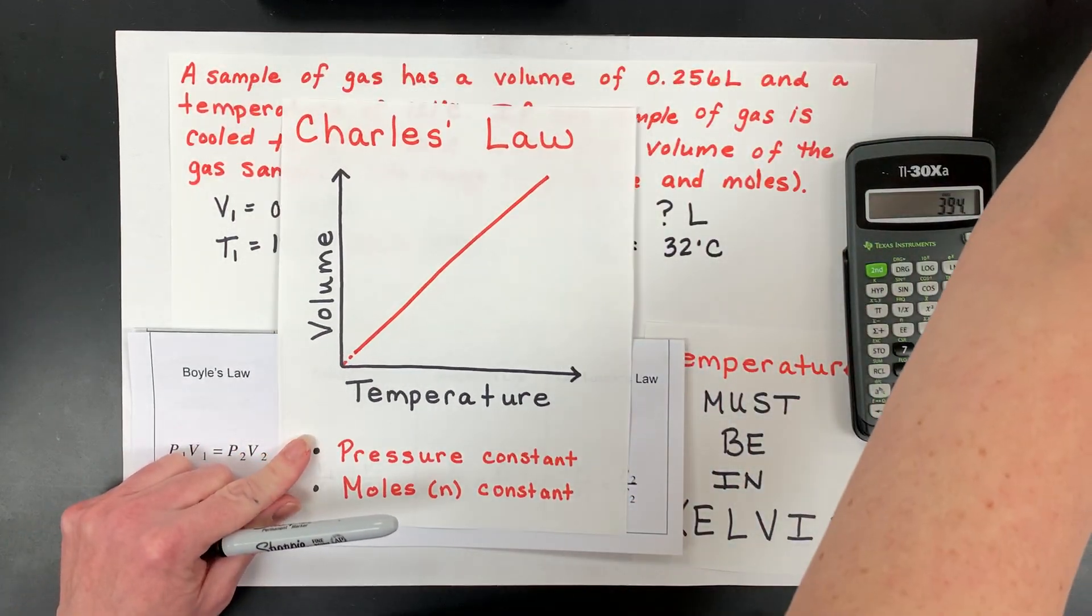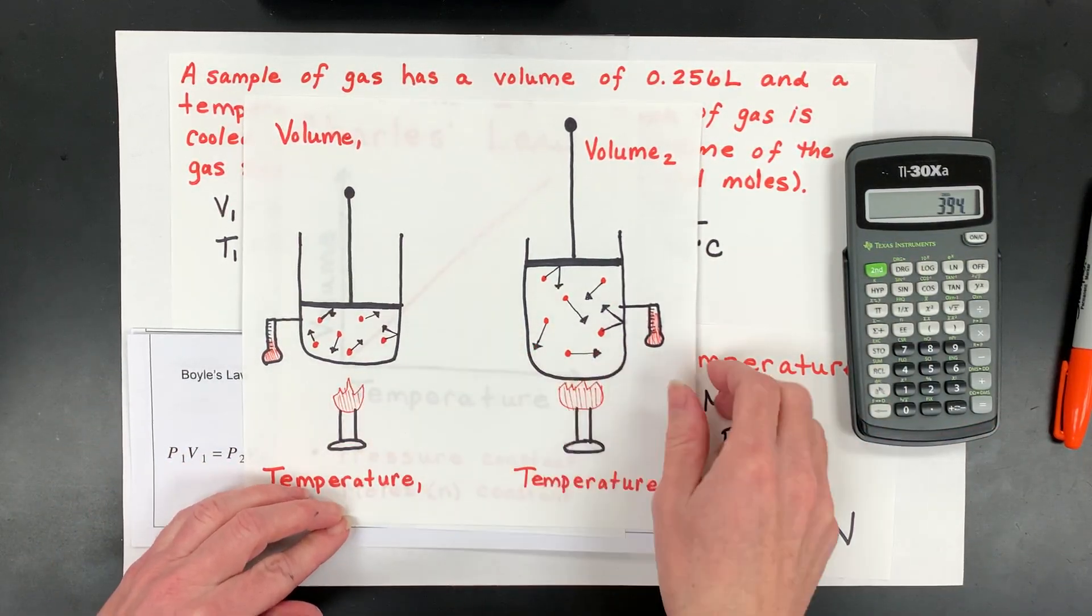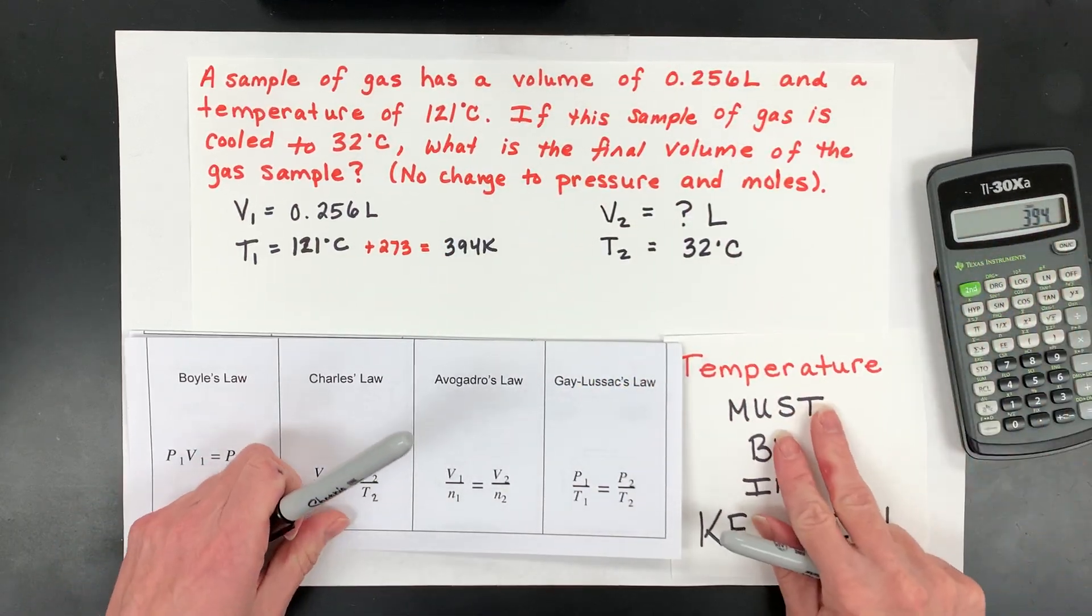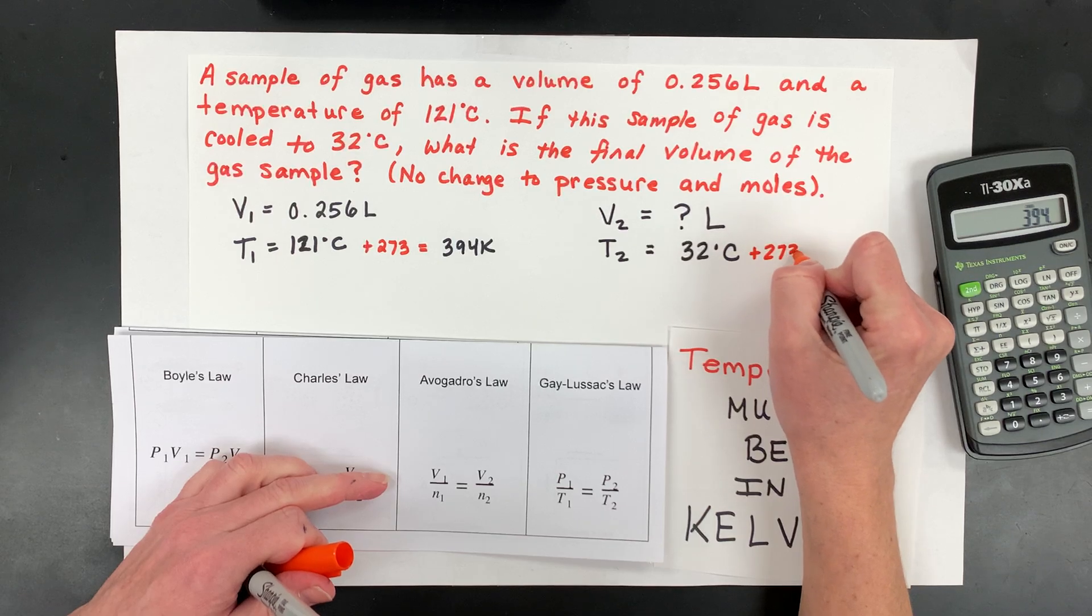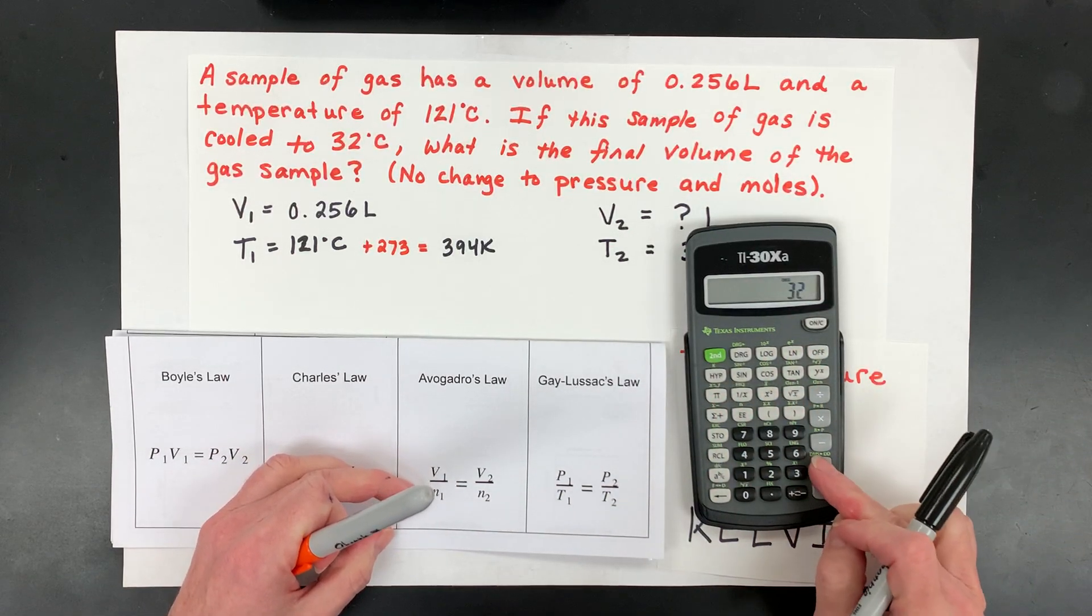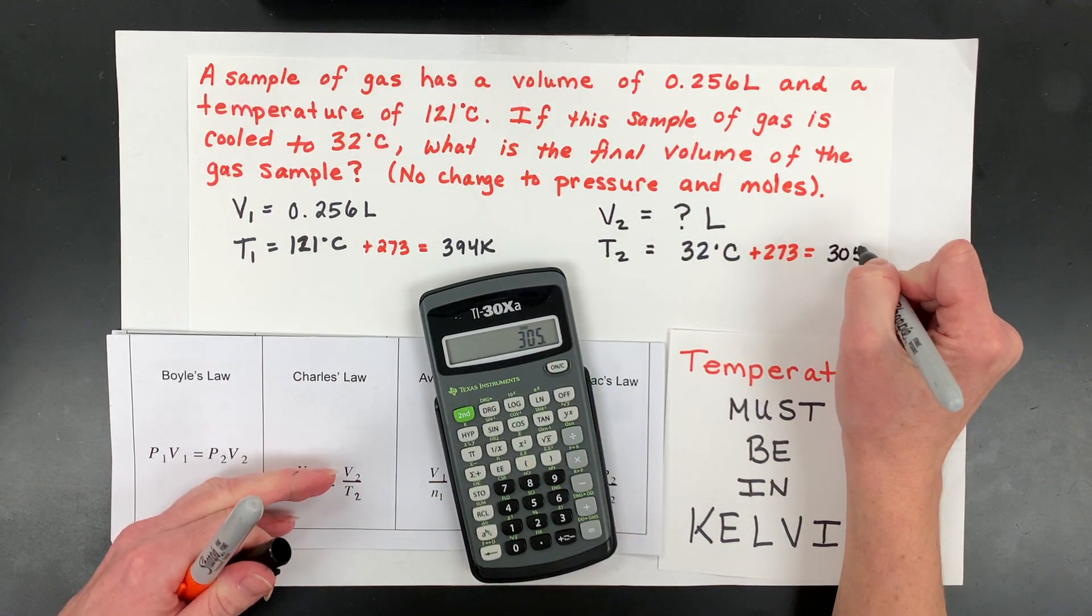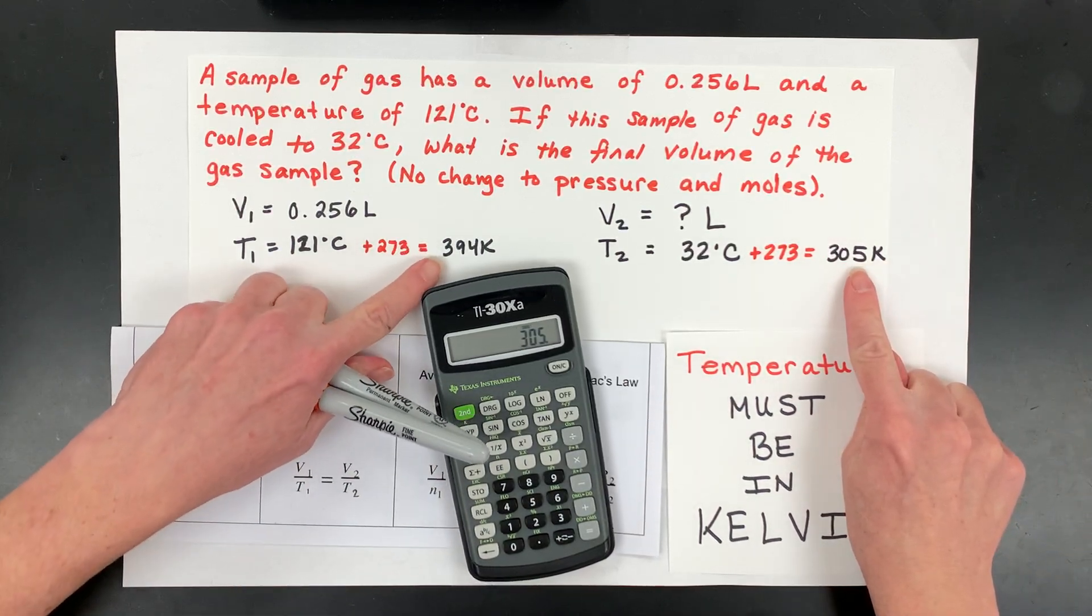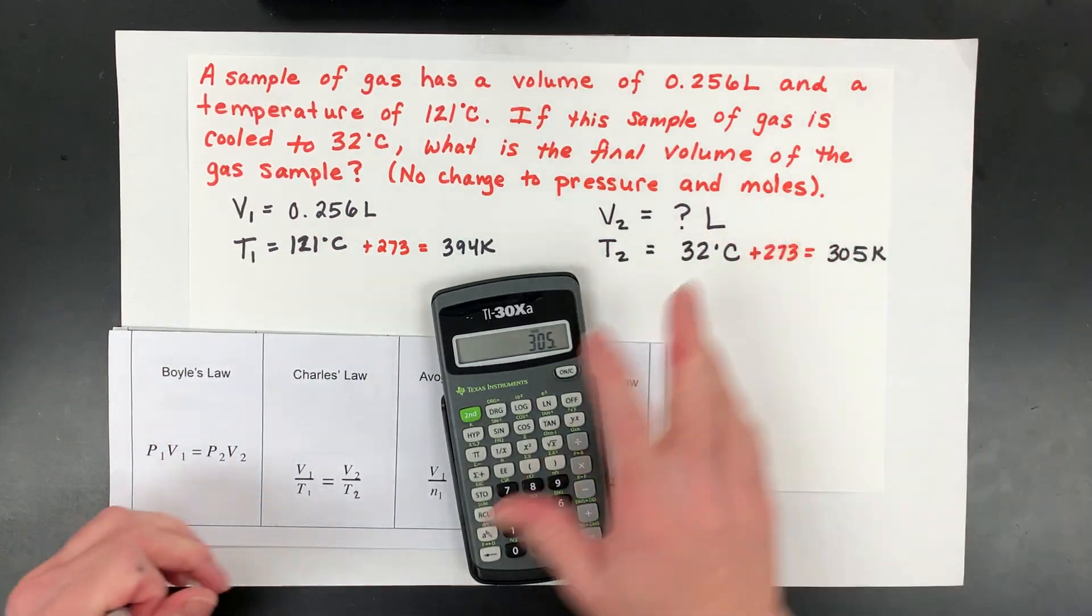Before you even do any of the math, think of the graph, think of the particulate view. We're going down in temperature, kind of the opposite of what I did. So what should happen to the volume? When we're done calculating, hopefully it'll make sense. We have to convert to Kelvin. This will give us a temperature of, let's do this together, 32 plus 273. I get 305. I do have to have my units matching. And in this case, they must be Kelvin for temperature. And then these have to also be the same, which they are, which is liters.